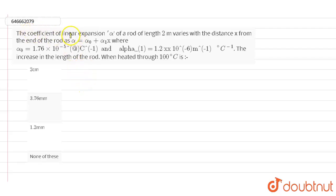It is given that the coefficient of linear expansion alpha of a rod of length 2 meters varies with the distance x from the end of the rod as alpha equals alpha naught plus alpha 1 times x, where...